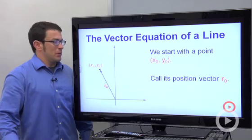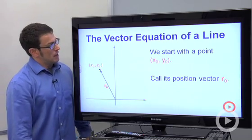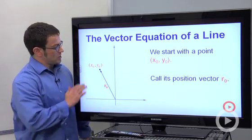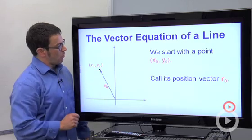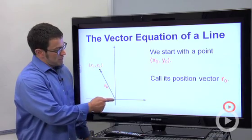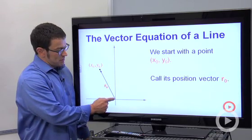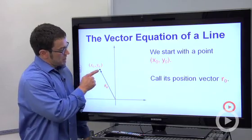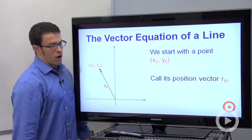The vector equation of a line is very similar. Take a look at our example here. We start with a point, just an arbitrary point, x0, y0, and then we define its position vector. Remember, a position vector is a vector going from the origin to our given point, and we'll call that r0.